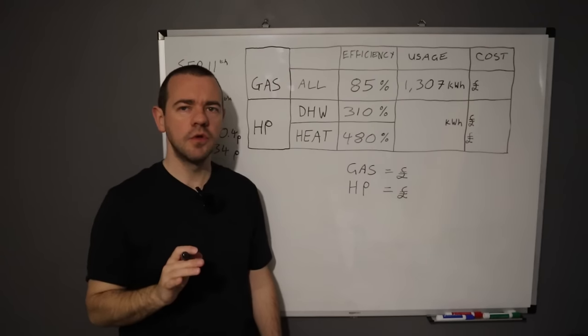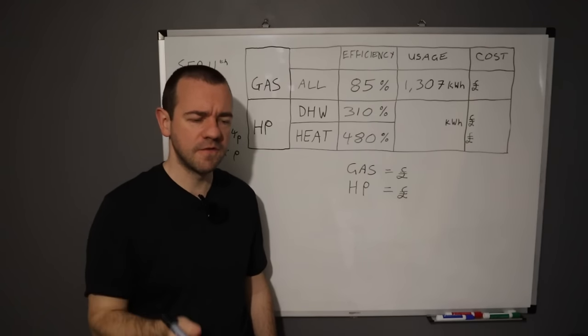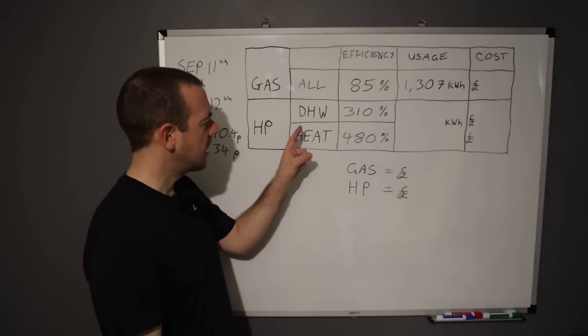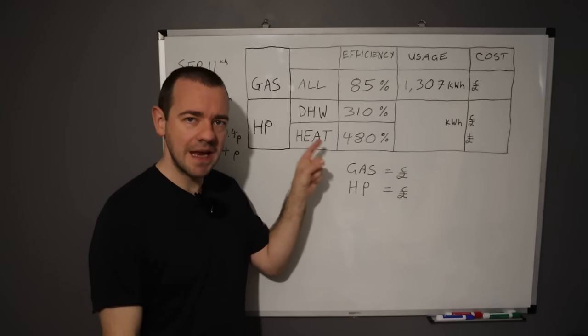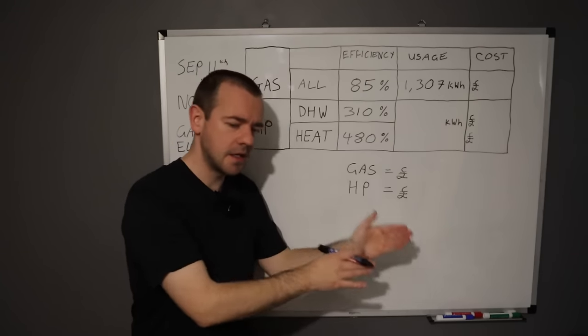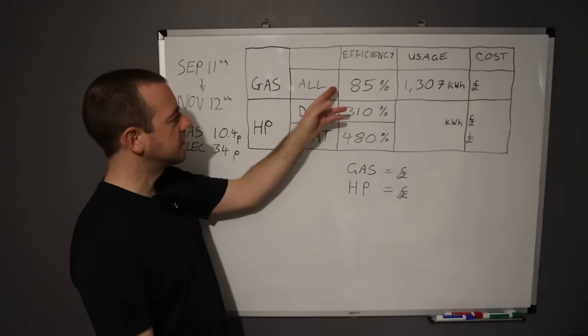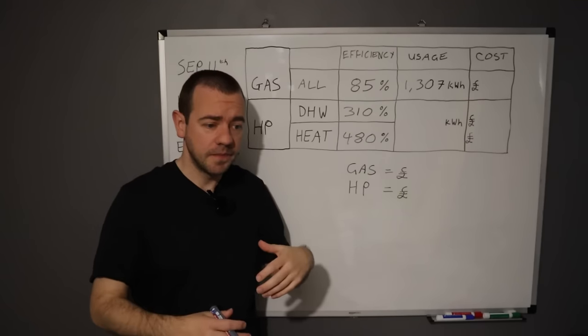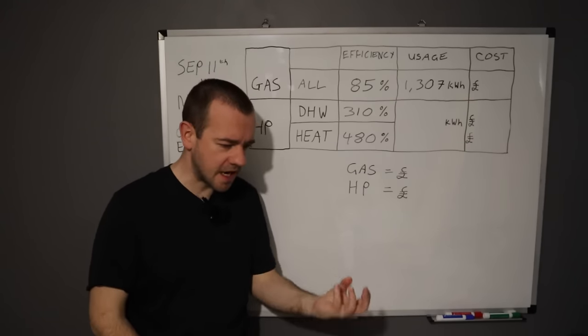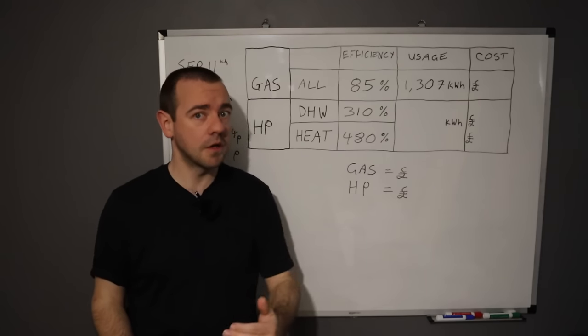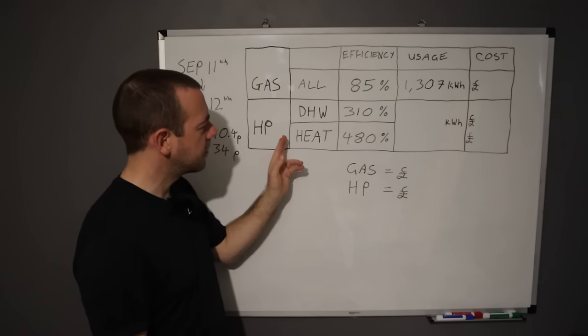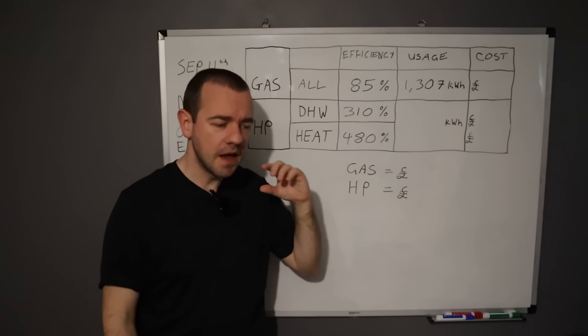Now if you're wondering how anything can be above 100% efficiency, that's because a heat pump doesn't generate anything. It moves heat from outside to inside, whereas a gas boiler literally generates heat. It burns gas to generate heat. That can't go above 100%.